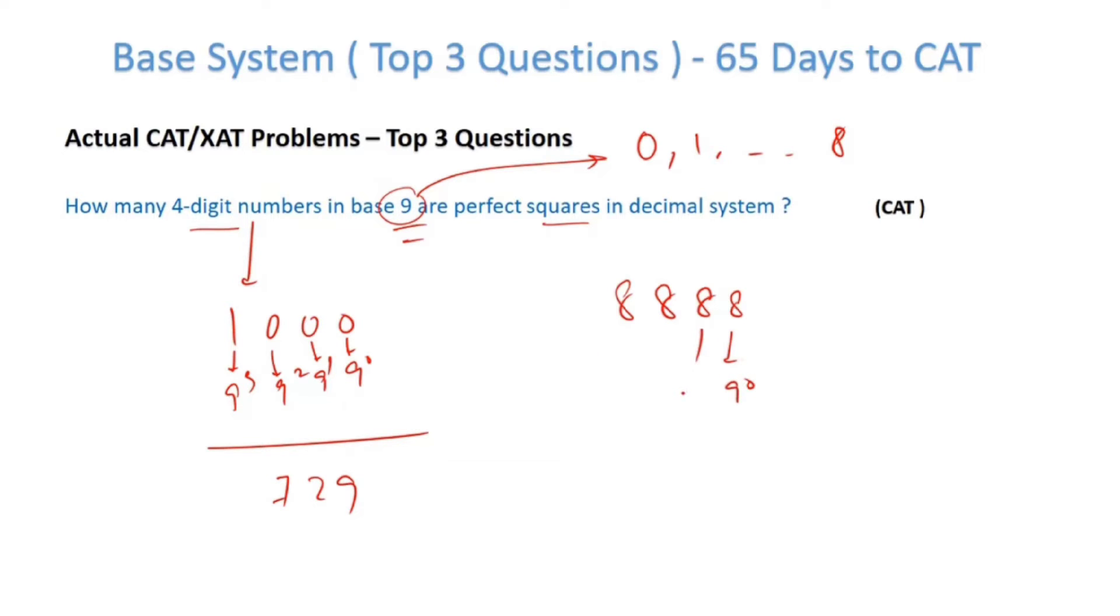Similarly, this will also be 9^0, 9^1, 9^2, 9^3. So just multiply: 8×9³ + 9² + 9¹ + 9⁰. This is nothing but a GP: (9⁴ - 1)/(9 - 1), so that gets cancelled.